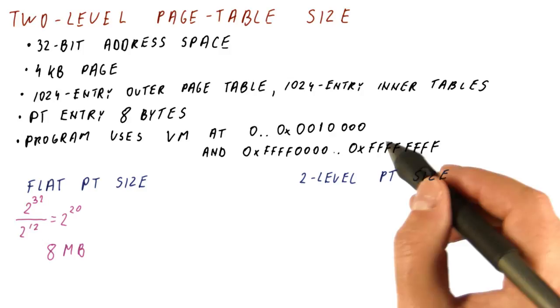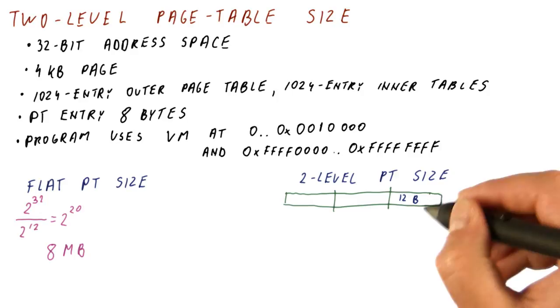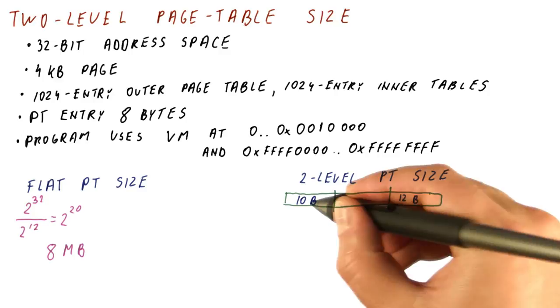Our address is now composed of a 12-bit offset to index into the 4 kilobyte page, a 10-bit outer page number and a 10-bit inner page number. They need to add up to 32, which they do.